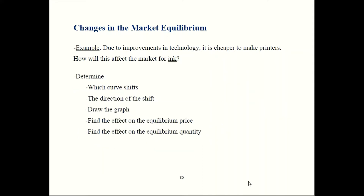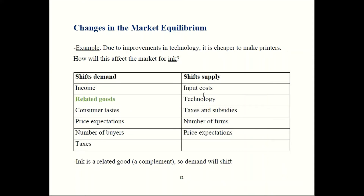We have another printer example. We already know what happens when technology improves and what that does to the effect on printers. My next question is how it will affect the market for ink. Go work that same five-step process — pause the video while you work that out. Let's go over the answer. We've got to figure out which curve is shifting; go back to that list of which factors shift which curve.